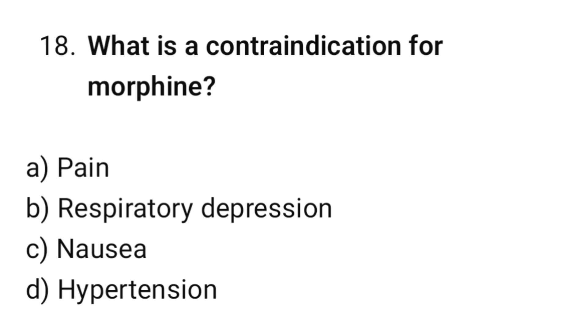Question number eighteen: What is a contraindication for morphine? The correct option is B, respiratory depression.